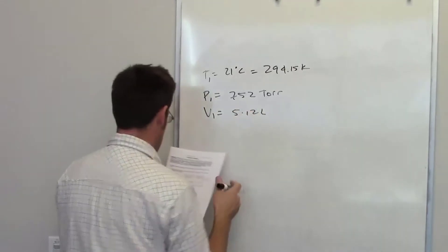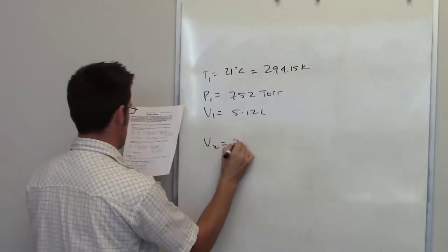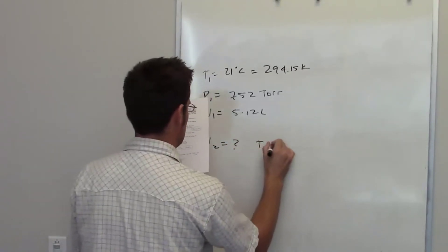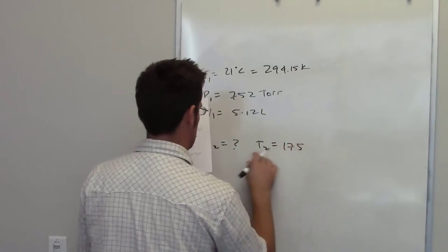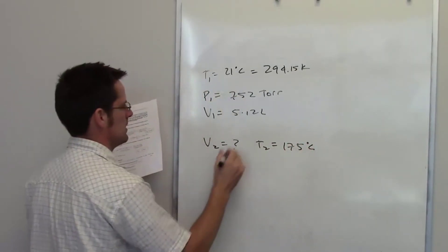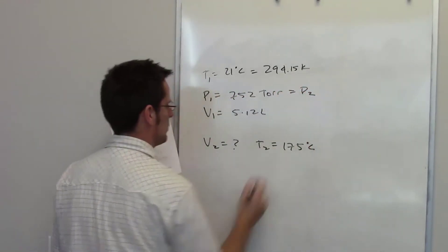Once again, in this question, it's asking us to calculate the final volume, so V2 is the mystery. The gas will occupy if the temperature is increased, so I've got T2 being changed to, or T2 being 175 degrees Celsius, while the pressure is held constant. So pressure, P1 and P2, are equal to each other in this case.